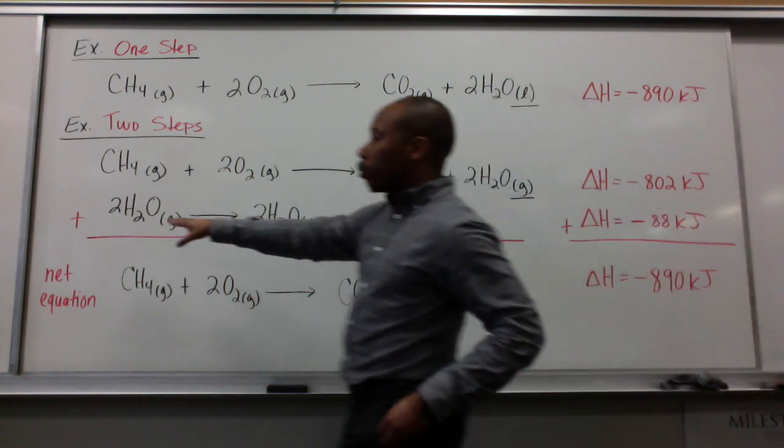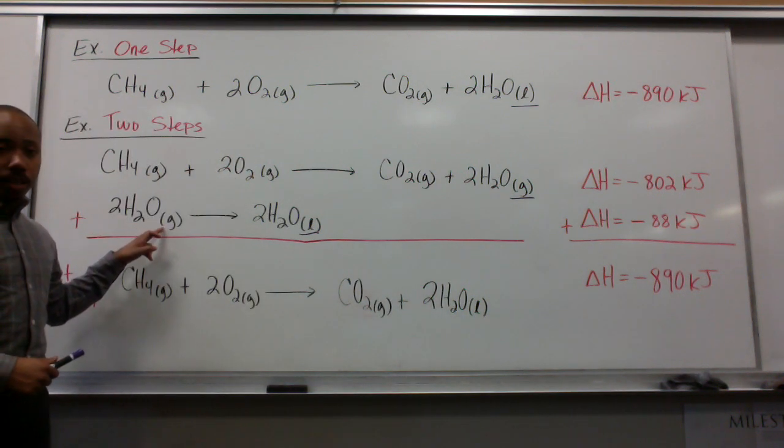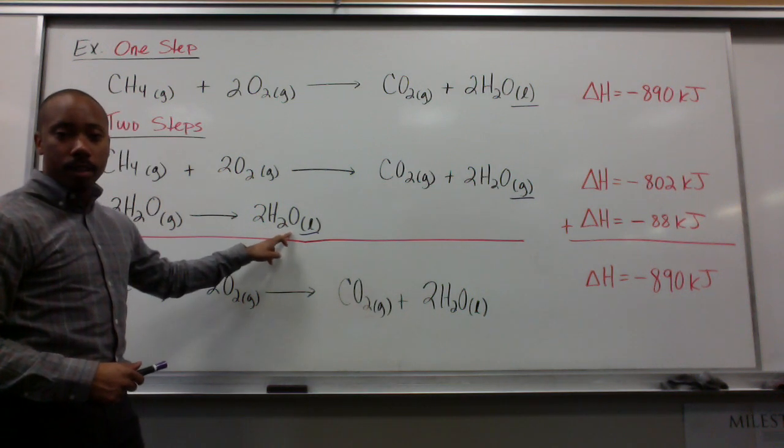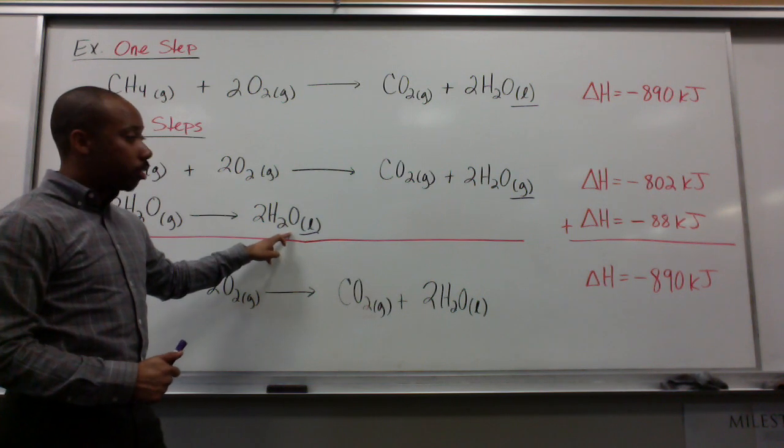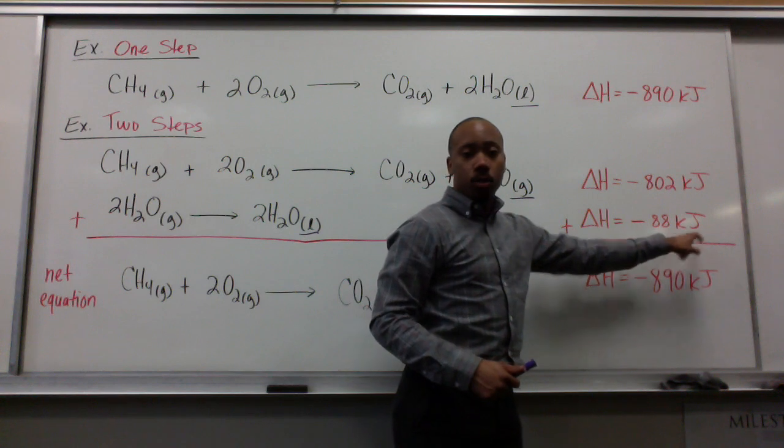If I have this one here, this reaction, we have two moles of water vapor then going to two moles of liquid water. This is an exothermic process, this is condensation, so I'm going to have to release 88 kilojoules of heat.